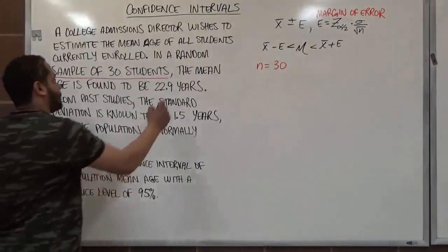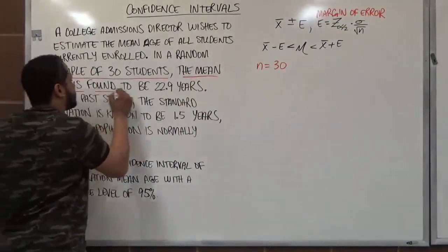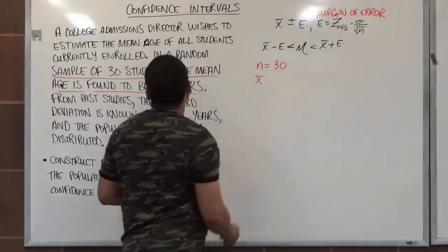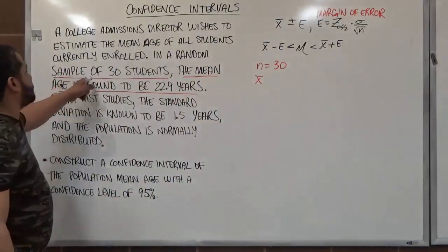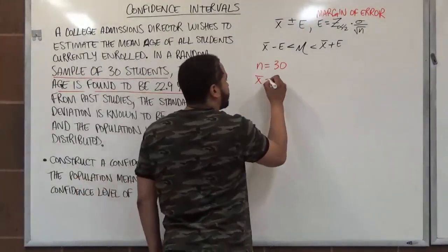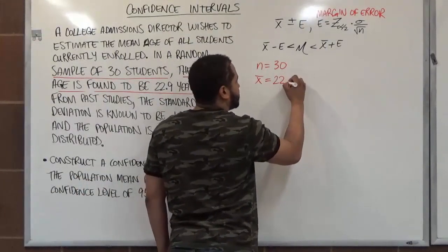The mean age is found to be 22.9 years. So that's our x̄ because this mean is coming from the sample of 30 students. So this tells us the mean is coming from the sample. So we have our sample mean here to be 22.9.